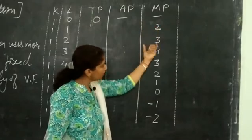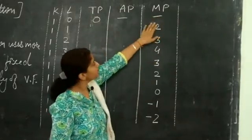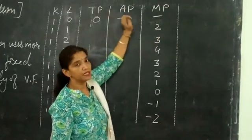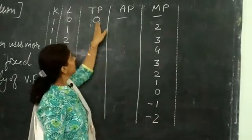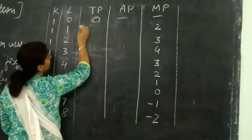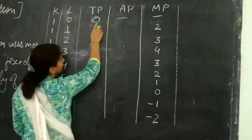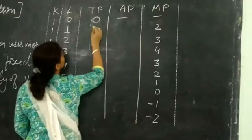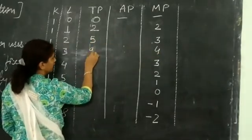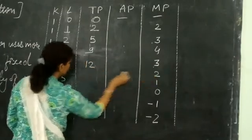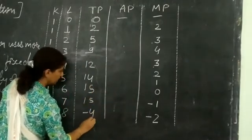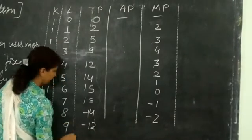After putting all the values into the MP column, we can calculate total production from marginal production, since MP is the difference of TP and TP is the cumulative addition of marginal units. TP starts at 0; with one labor it is 0+2=2; then 2+3=5; 5+4=9; 9+3=12; 12+2=14; 14+1=15; 15+0=15; 15−1=14; 14−2=12.